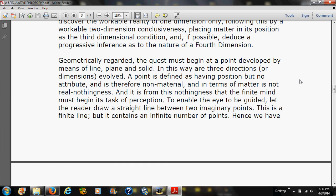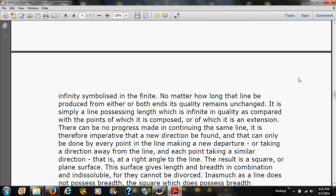Geometrically regarded, the quest must begin at a point developed by the means of a line, plane, and solid. In this way, there are three directions or dimensions evolved. A point is defined as having position but no attribute, and is therefore non-material, and in terms of matter is not real nothingness. And it is from this nothingness that the finite mind must begin its task of perception. To enable the eye to be guided, let the reader draw a straight line between two imaginary points. This is a finite line, but it contains an infinite number of points. Hence, we have infinitely symbolized the finite. No matter how long that line be produced from either or both ends, its quality remains unchanged. It is simply a line possessing length, which is infinite in quality as compared with the points of which it is composed.